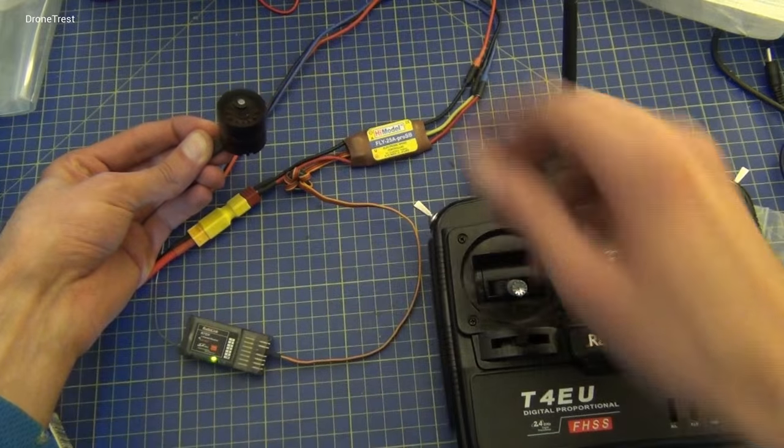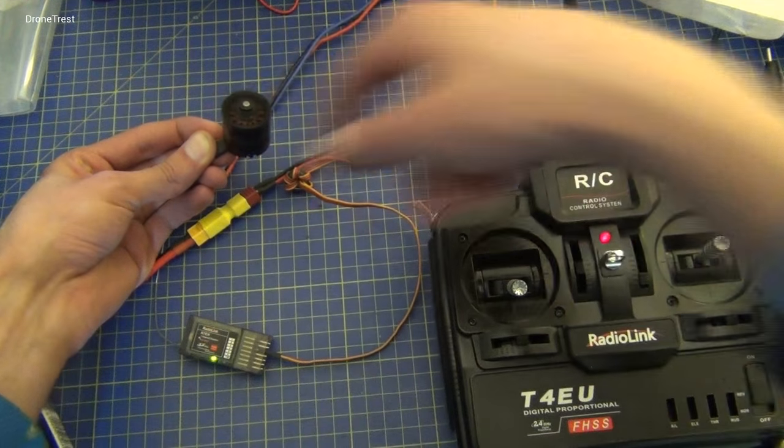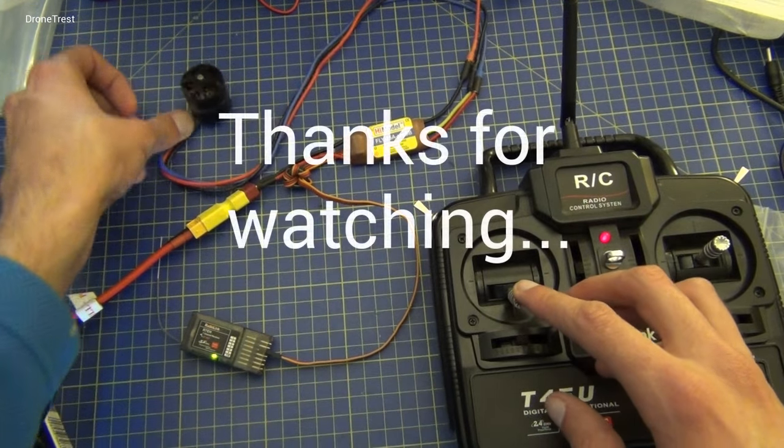We increase the throttle slightly and we can see which way the motor is spinning. Hope this was helpful and check out DroneTrust.com for more information.